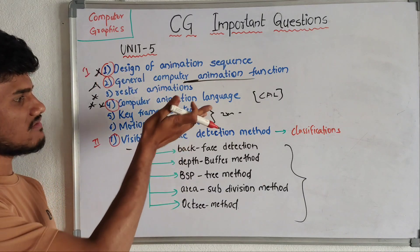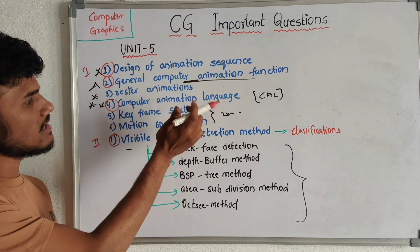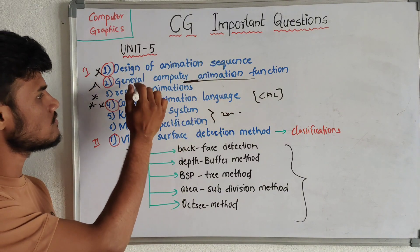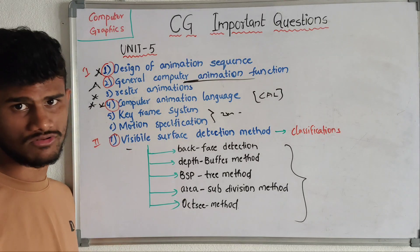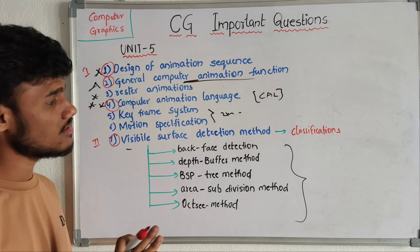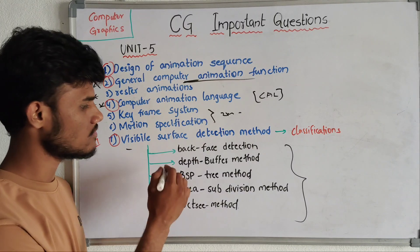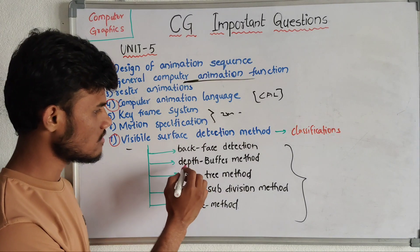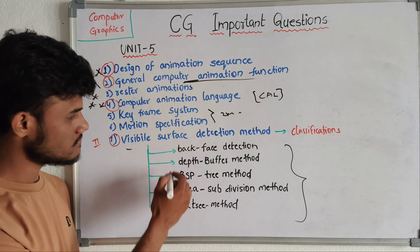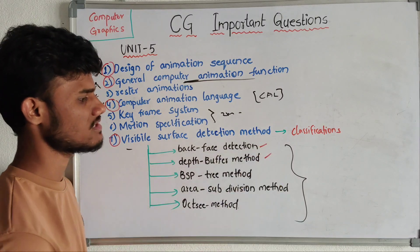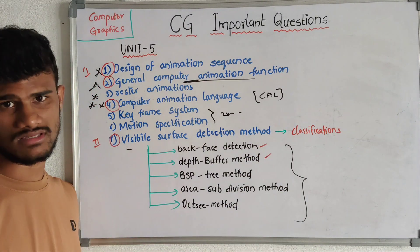My suggestion: you need to learn design of an animation sequence as the first question, general computer animation functions as the second question, computer animation language as the third, and the complete visibility surface detection topics. These are the must-answer questions for this unit.